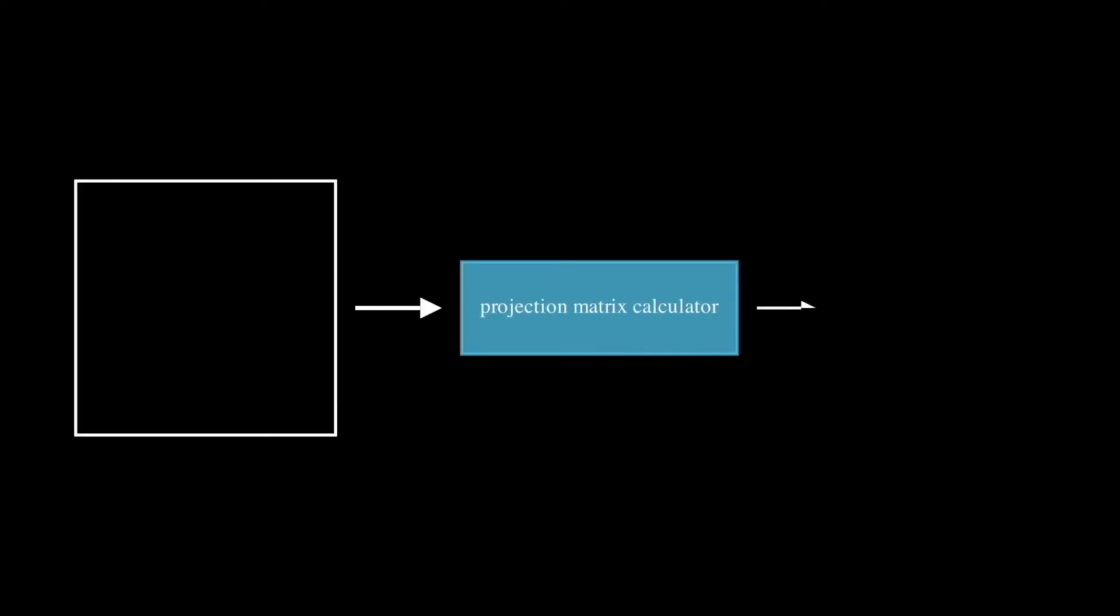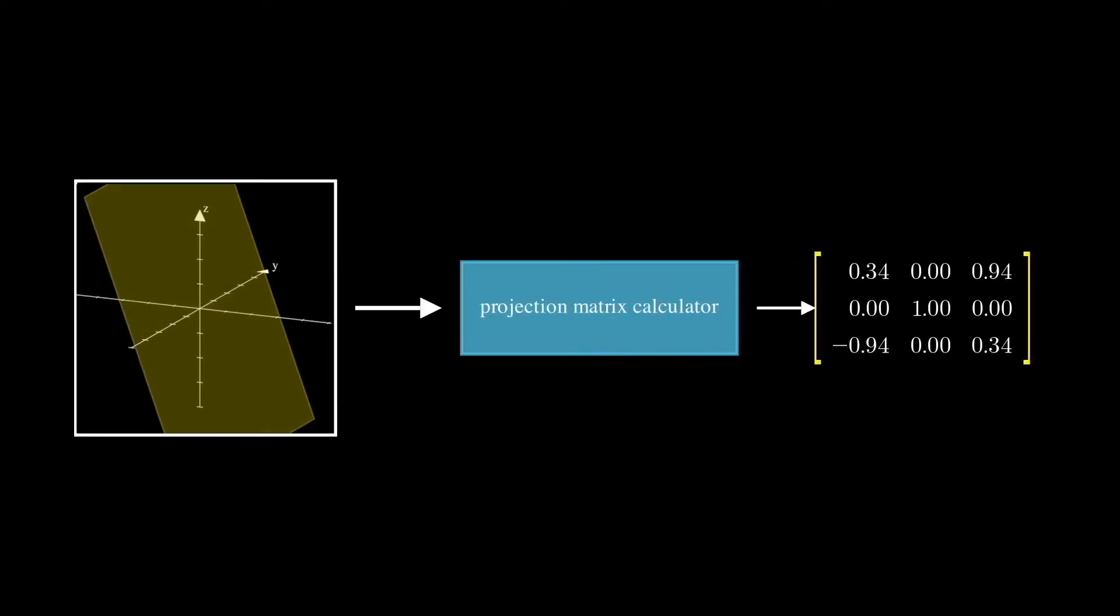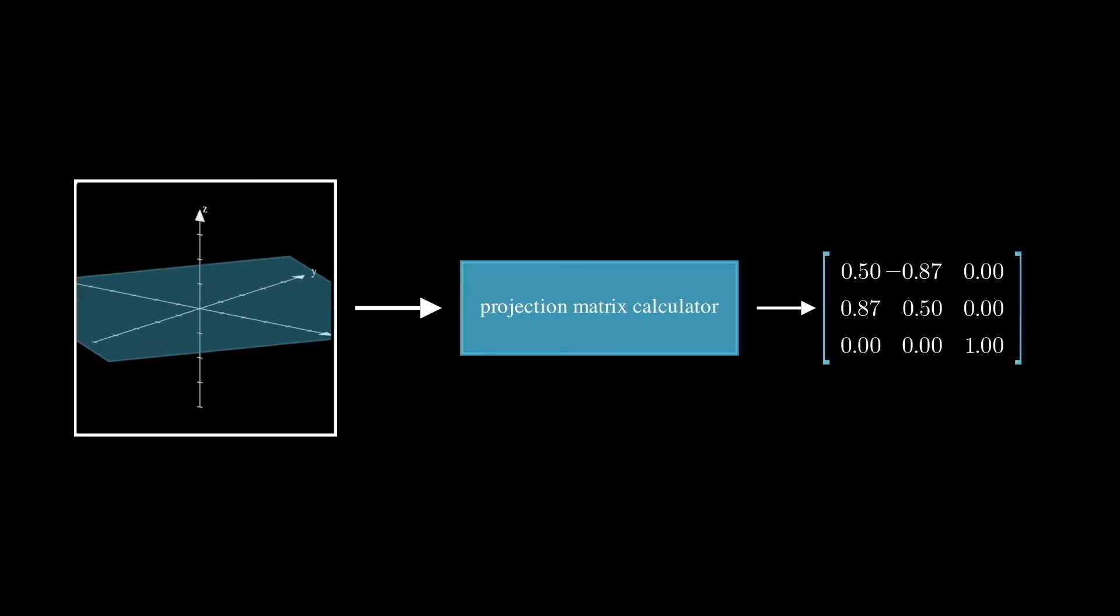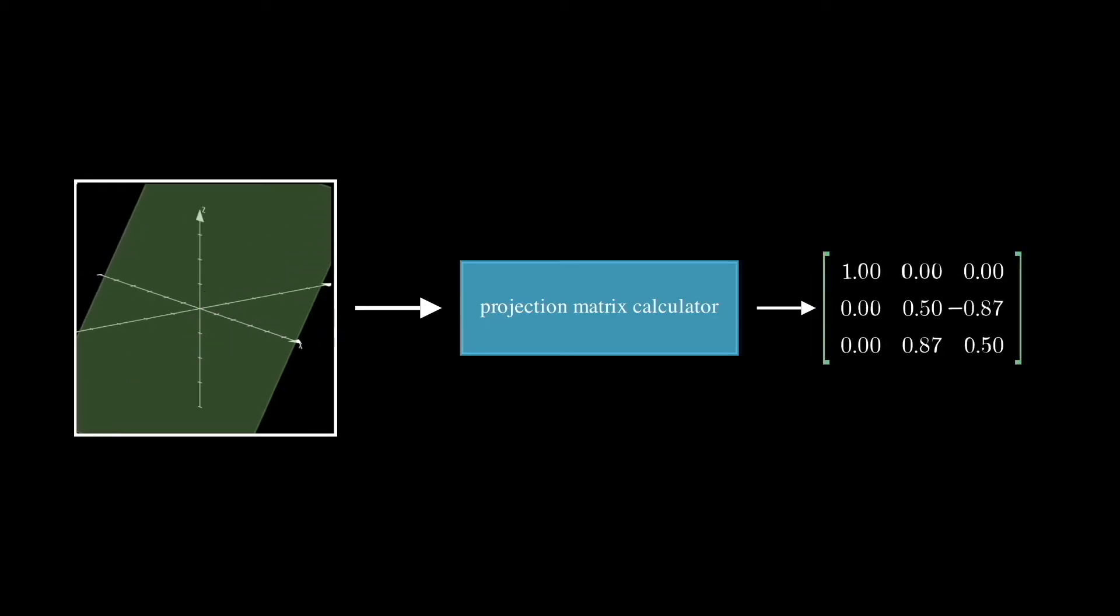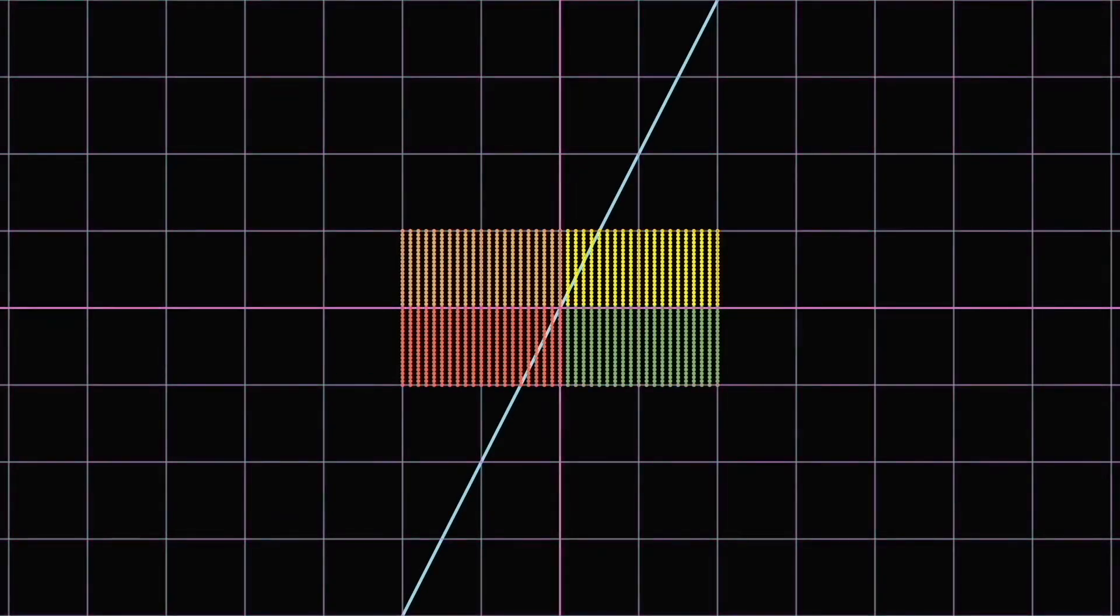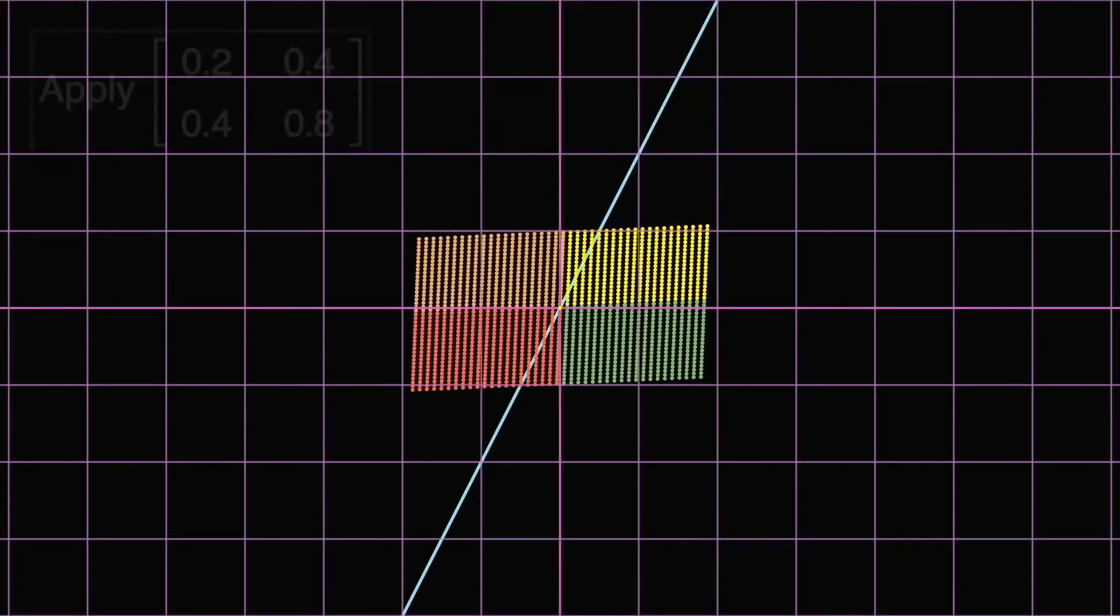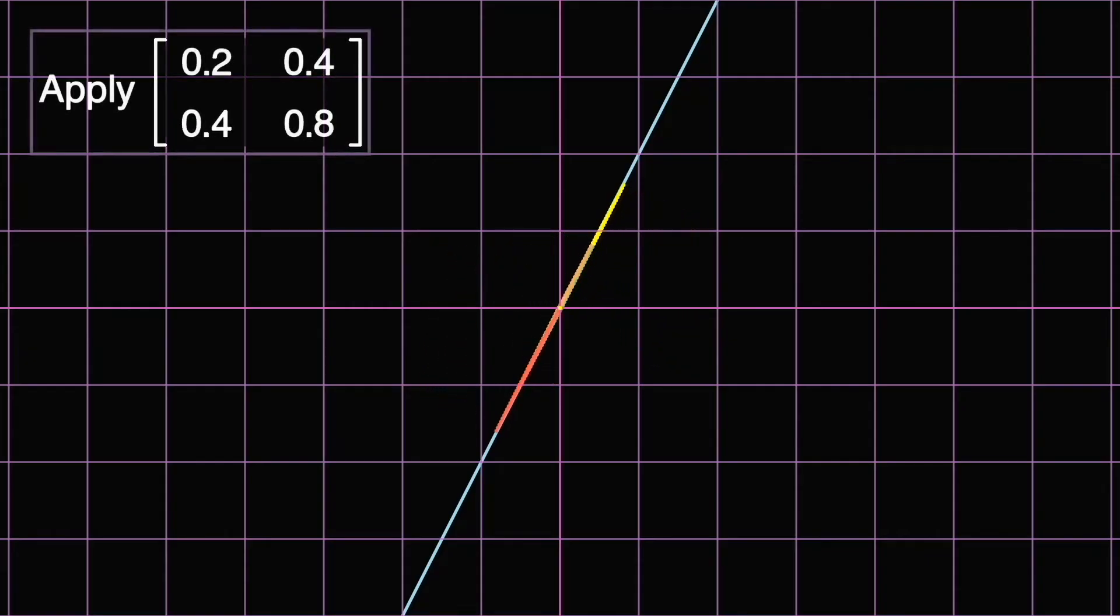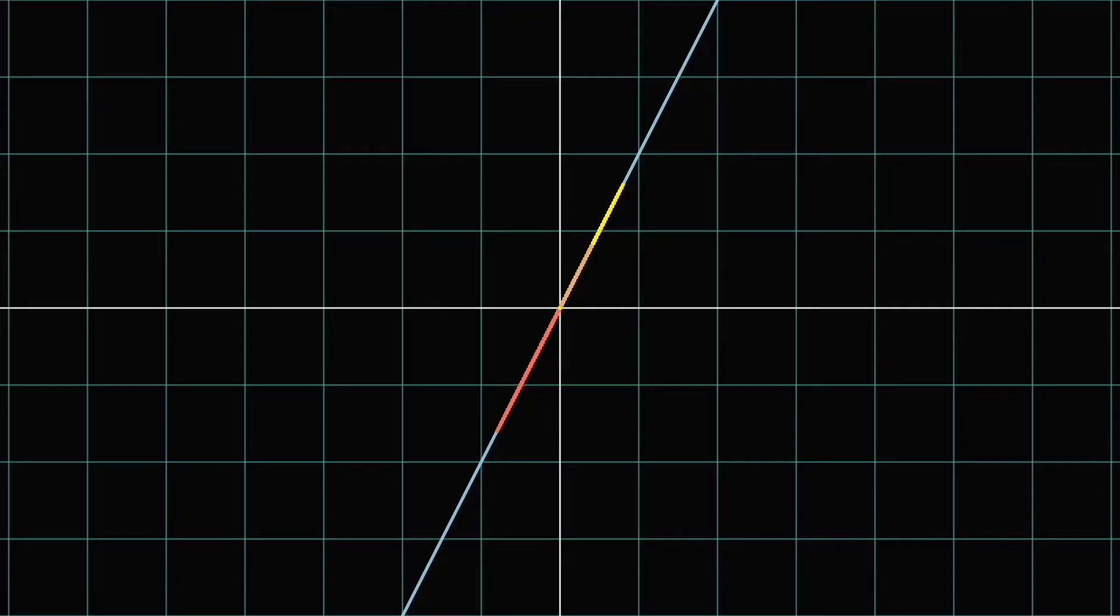For every subspace that exists, our computer can calculate its corresponding projection matrix, which would move every vector outside the subspace onto the subspace. Let's take a look at the projection matrix of this blue line here. After the projection transformation, every single dot has been compressed onto the line.